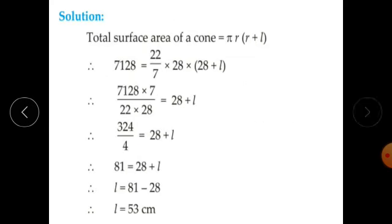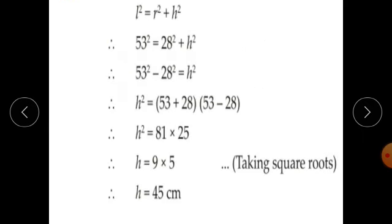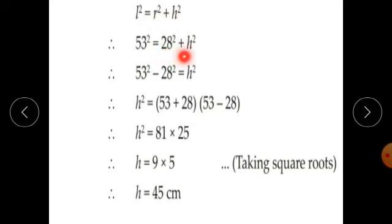Now, slant height L is 53. Using L squared equals R squared plus H squared: 53 squared equals 28 squared plus H squared. So 53 squared minus 28 squared equals H squared. Find out the perpendicular height.